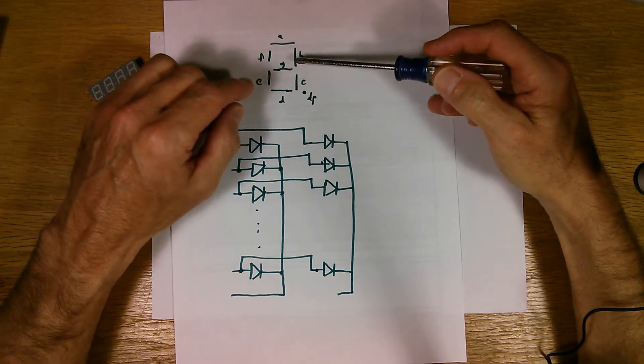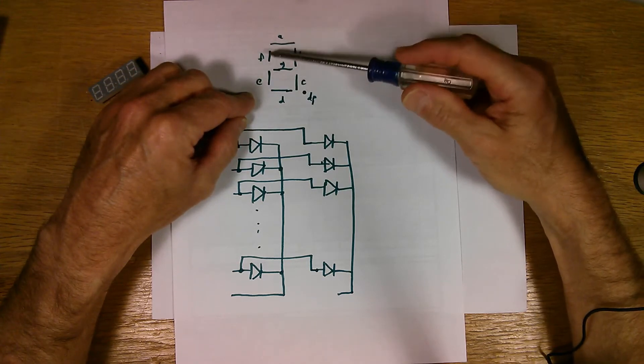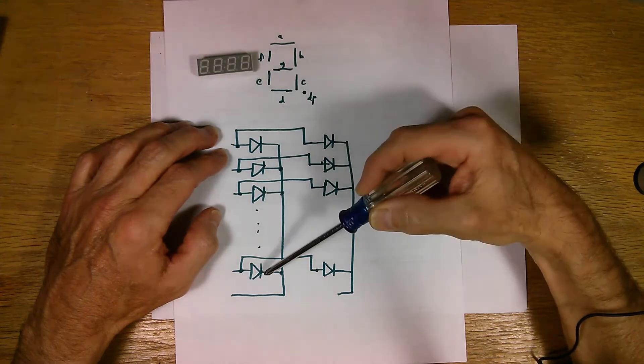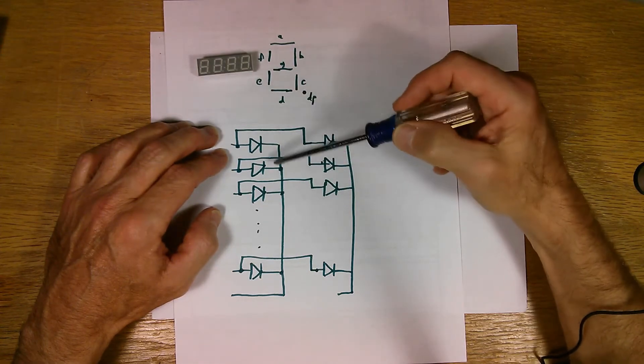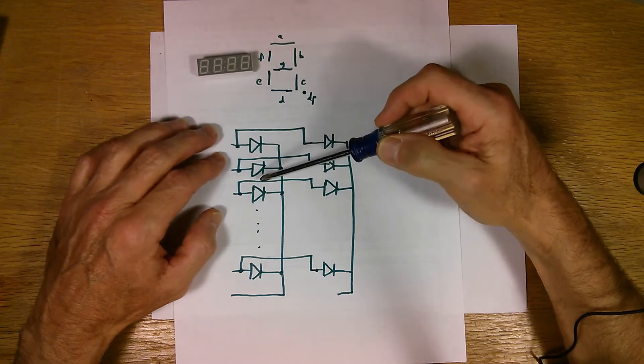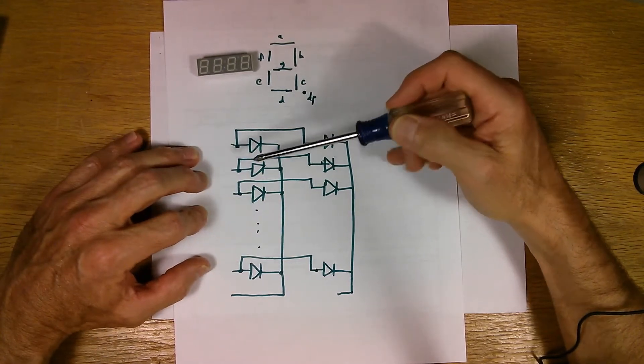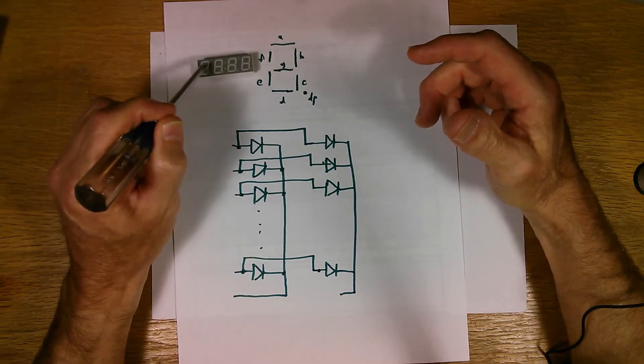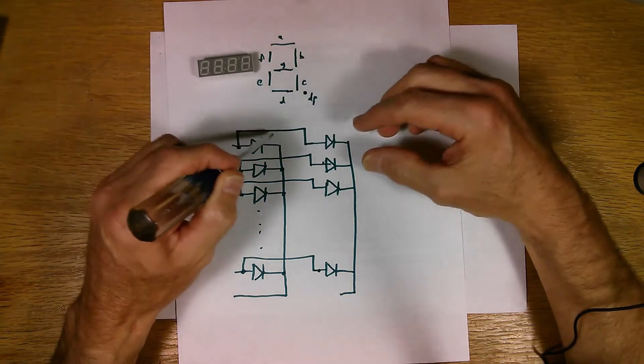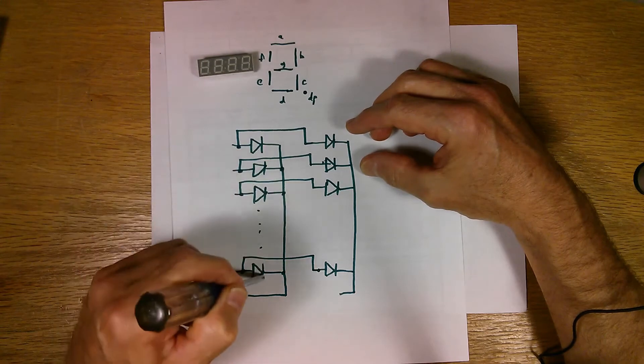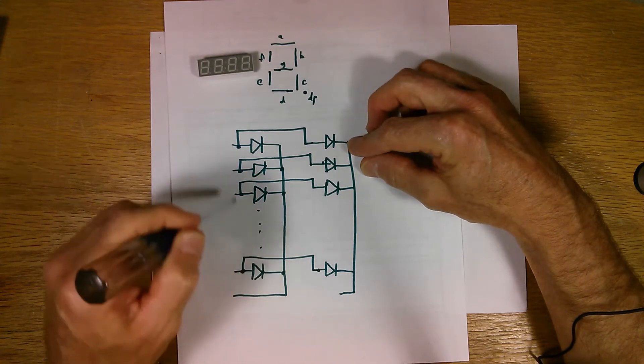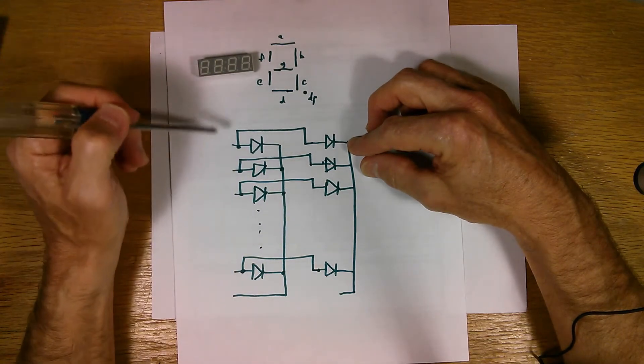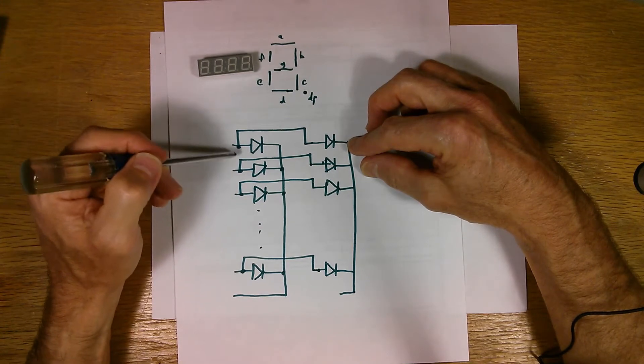And the way the LEDs are wired up in this device is that one end of all the diodes is all connected together for each digit. The other end of each of the diodes is free, available to be hooked up to. So each digit looks kind of like this. You've got your seven or eight LEDs. They're all hooked up in this manner, where the cathode, in this case, is all connected together to one pin. And then the anodes for each of the LEDs comes out on separate pins.